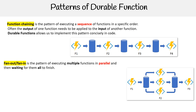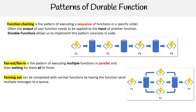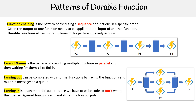Then you have fan out fan in. This is a pattern of executing multiple functions in parallel and then waiting for them all to finish. Fanning out can be completed with normal functions by having the function send multiple messages to a queue. Fanning in is much more difficult because we have to write code to track when the queue-triggered functions and store their output. The durable function extension handles this pattern with relatively simple code.